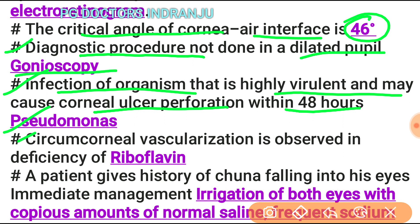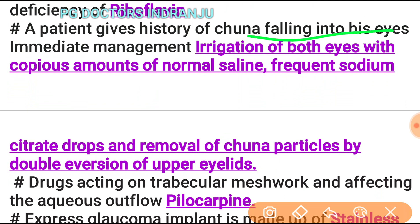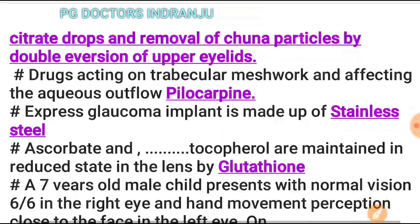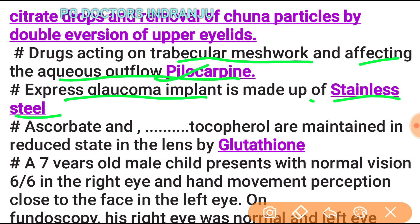Circumcorneal vascularization is observed in deficiency of riboflavin. For a patient with lime (tuna/alkali) falling into the eye, immediate management is irrigation of both eyes with copious normal saline, frequent sodium citrate drops, and removal of particles by double eversion of the upper eyelid. The drug acting on the trabecular meshwork and affecting aqueous outflow is pilocarpine. The Express glaucoma implant is made of stainless steel.